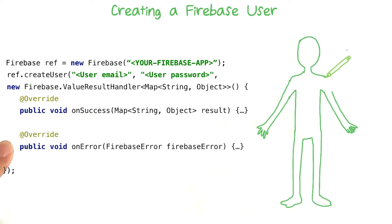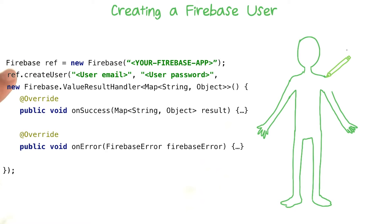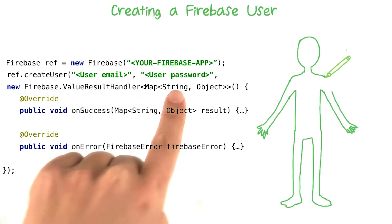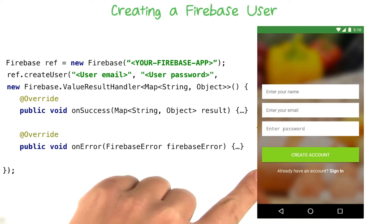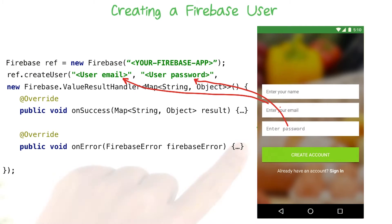Here's some code that I copied over from the Firebase documentation. It's basically showing you how to use this createUser method to make a new user with the email password provider. To start, you get a hold of a Firebase reference. Then on that reference, you call createUser, passing in both the email and password that you want to associate. Taking a quick look at the create account activity, I've made two edit texts for you that have this information that you need.